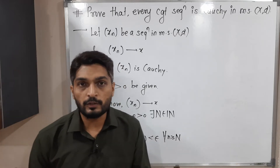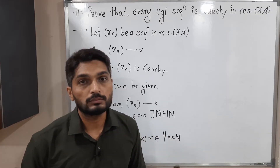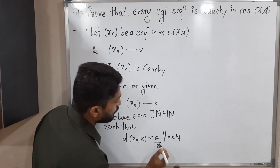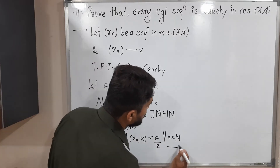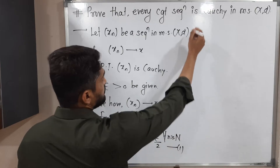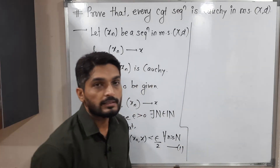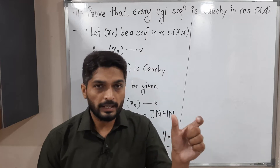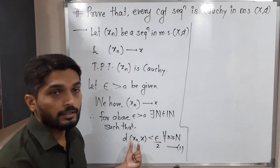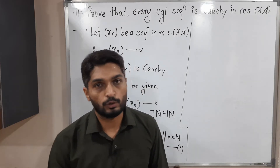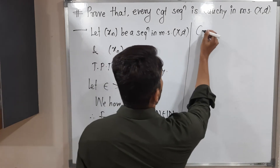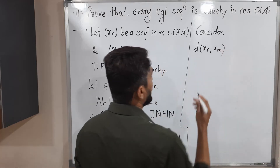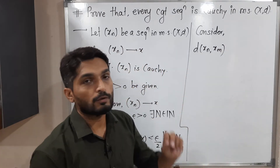Our target is to prove the sequence xn is a Cauchy sequence. A sequence is Cauchy if d(xn, xm) — taking two terms of the sequence — is less than epsilon. So consider d(xn, xm): we are talking about the distance between two terms of the sequence and we have to prove it is less than epsilon.